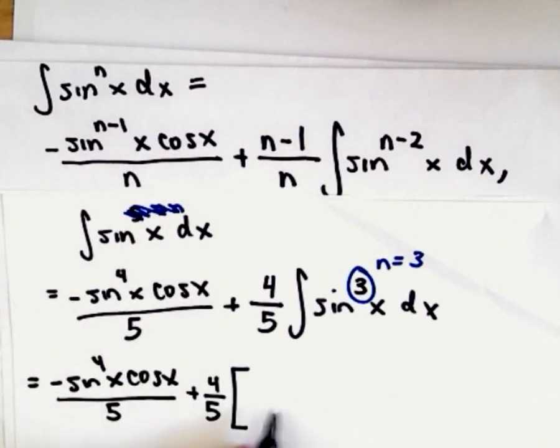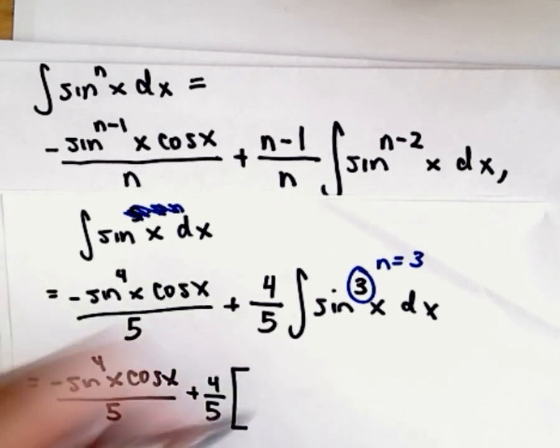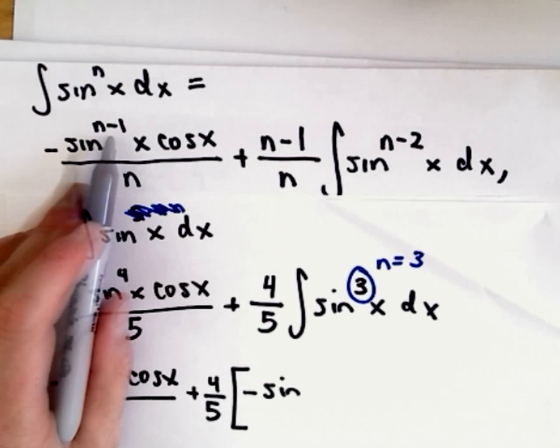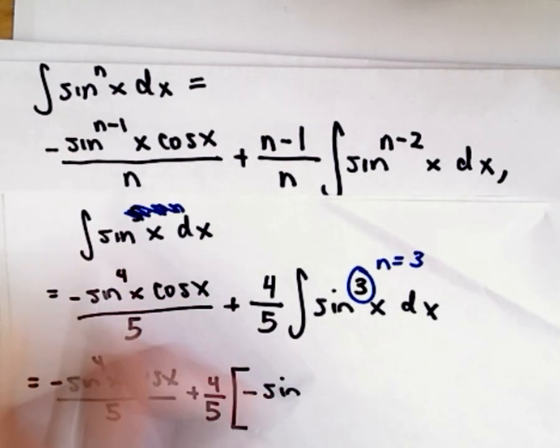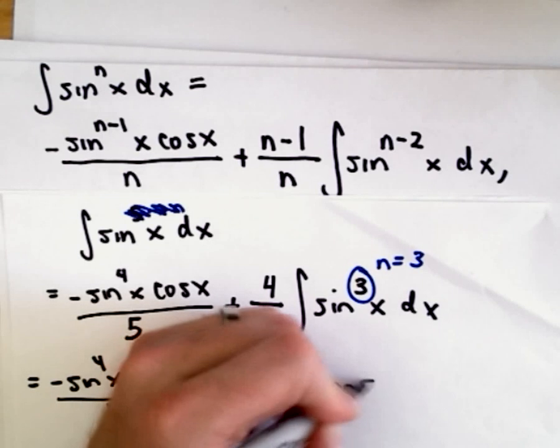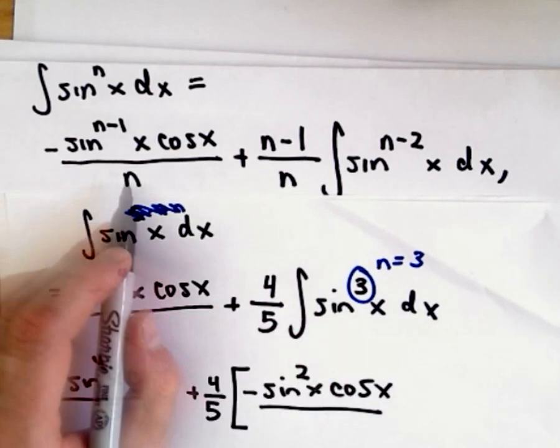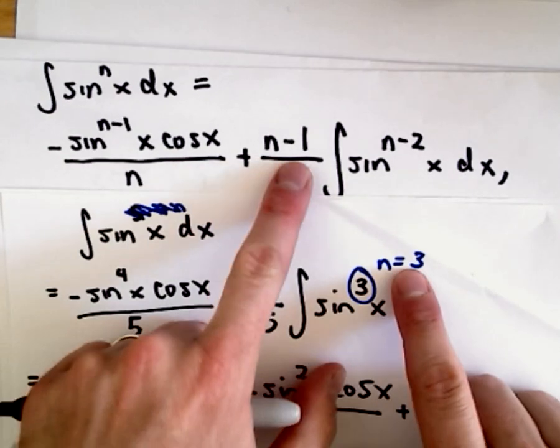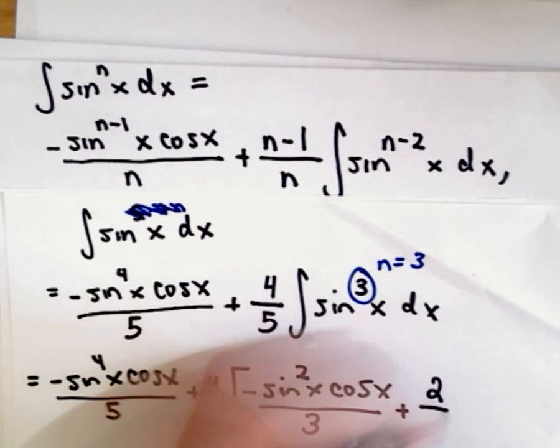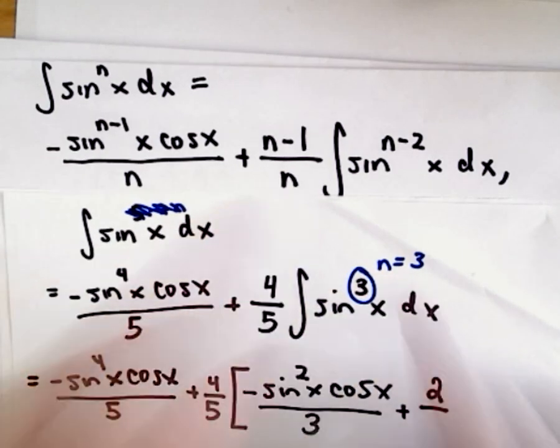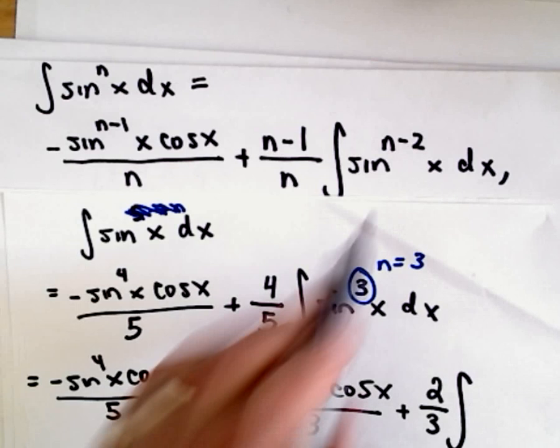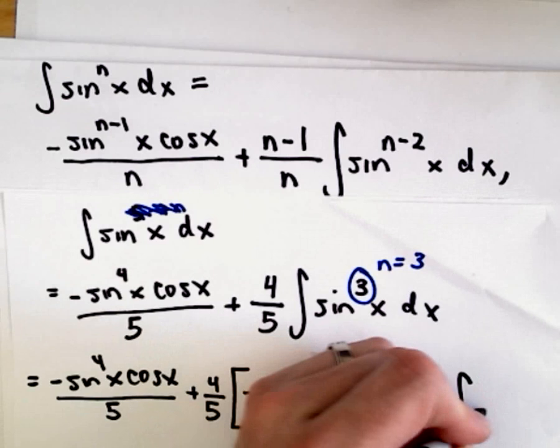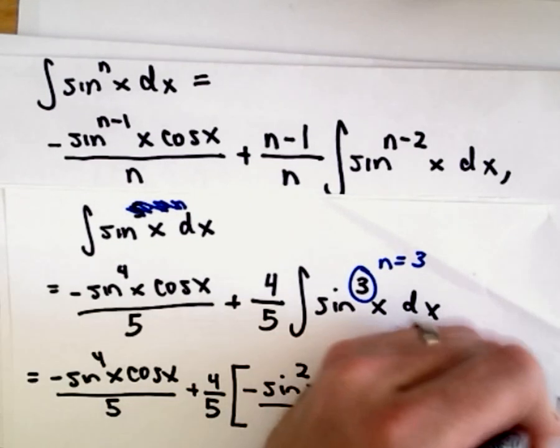The 4 fifths is going to have to get distributed to everything, so let's be careful about that. But it says we have negative sine, so if we take n minus 1 that's just going to give us 3 minus 1 or a power of 2, times cosine x, all over n which is in this case 3. Plus if we take 3 minus 1, that'll give us 2 over our value of n which is 3. And then now we're left integrating sine raised to the power of 3 minus 2, well 3 minus 2 is just going to be the power of 1. So now we're just integrating sine x.